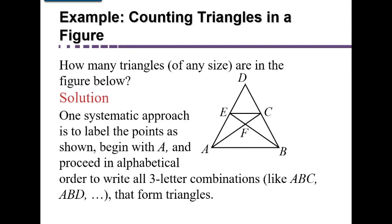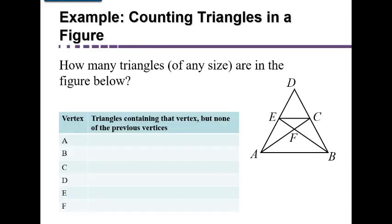We're going to list out all the three-letter combinations and look at which ones form triangles. To be organized, we're going to look first at all the ones that include vertex A — vertex means the corner. We have to keep everything in alphabetical order to avoid repetition. For example, I'm not going to list both A, B, C and A, C, B — I'm going to keep B and C in alphabetical order.